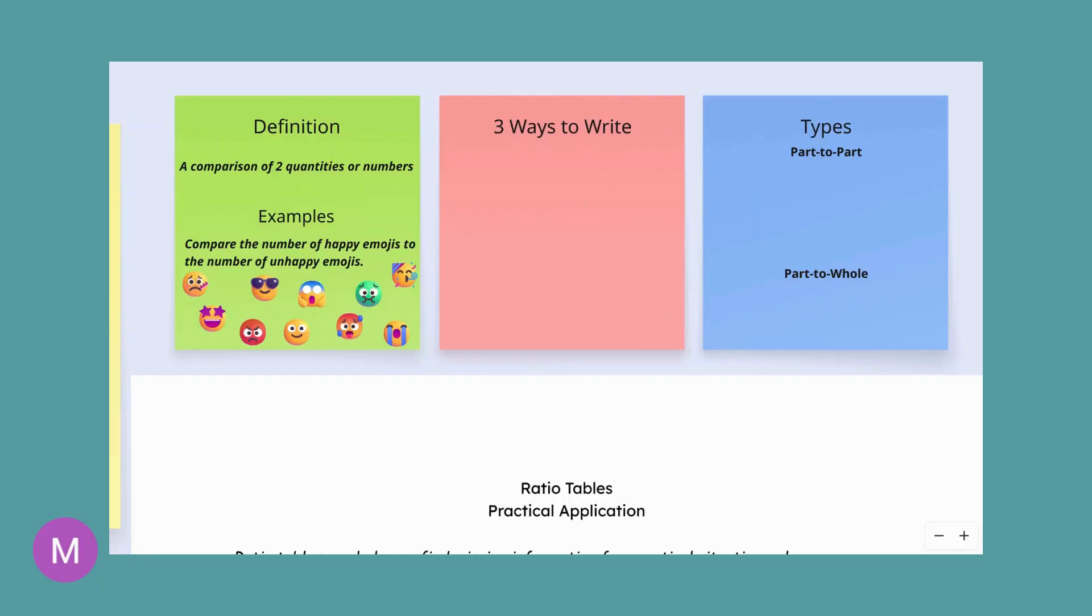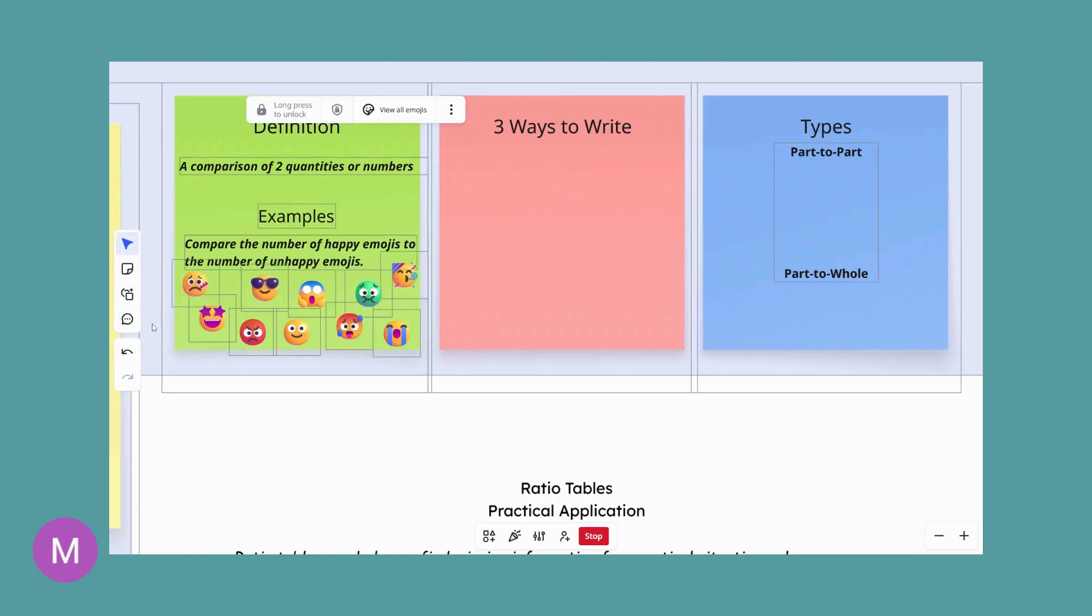But right now a ratio is just comparing two different numbers and we can write them different ways and we have different types of those ratios. So let's take a look at those. Three ways to write your ratios.